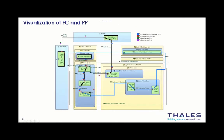We are also working on better visualization of functional chains on physical paths when many of them share the same path. Currently when you see black lines, it means several functional chains are following the same path. In future versions of Capella, there will be small indicators showing which functional chains are present — referenced by color-coded small boxes — enhancing the readability of these diagrams.